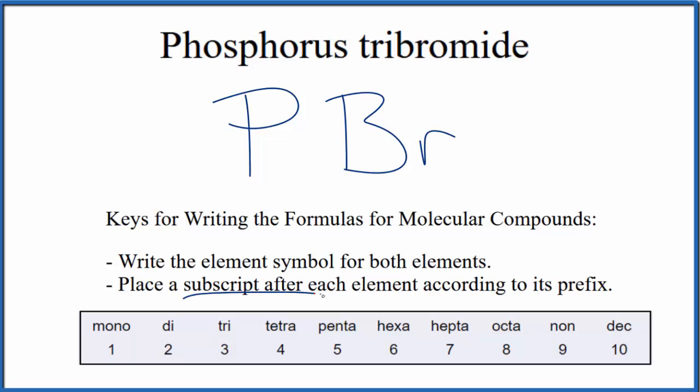Next, we'll place a subscript after each element according to its prefix. So when we look at phosphorus here, there's nothing in front of phosphorus. That means there's just one phosphorus atom in this compound. We don't write the one by convention, we just assume that it's there.